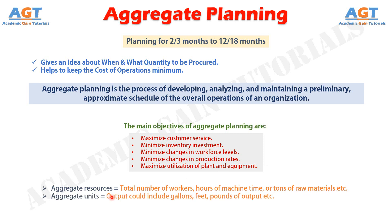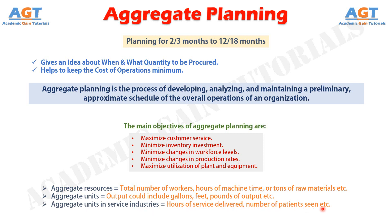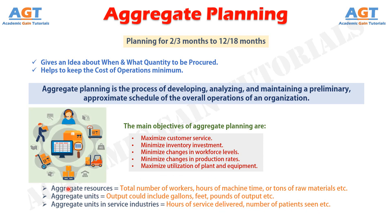Aggregate units of output could include gallons, feet, pounds of output, as well as aggregate units appearing in service industries such as hours of service delivered, number of patients seen, etc. Aggregate planning does not distinguish among sizes, colors, features, and so forth. For example, with automobile manufacturing, aggregate planning would consider the total number of cars planned for, not the individual models, colors, or options.